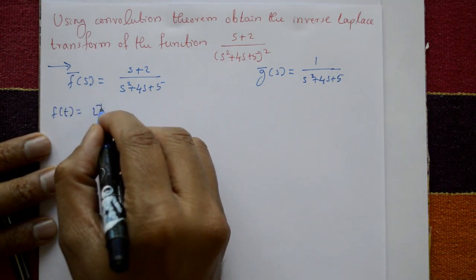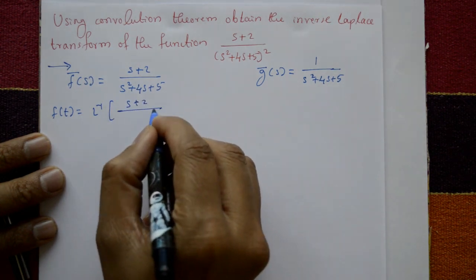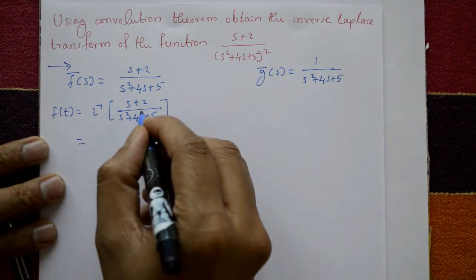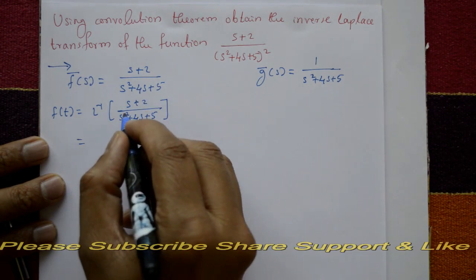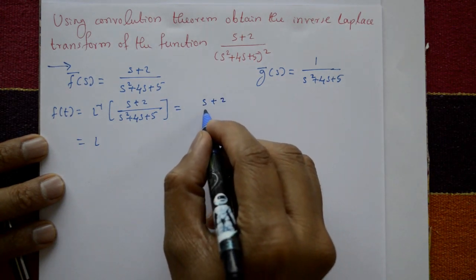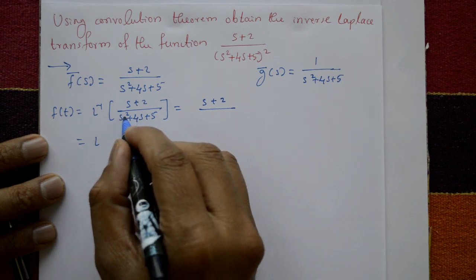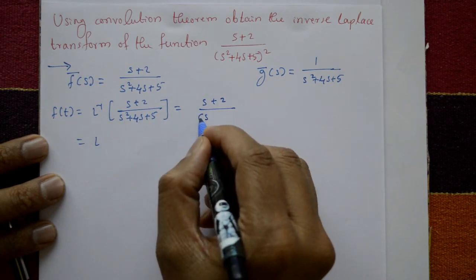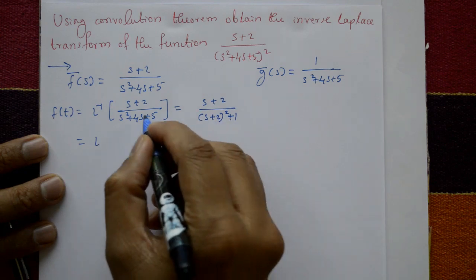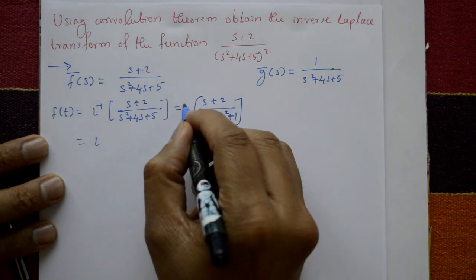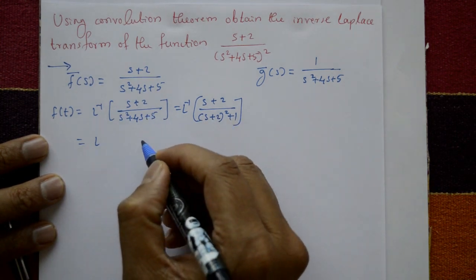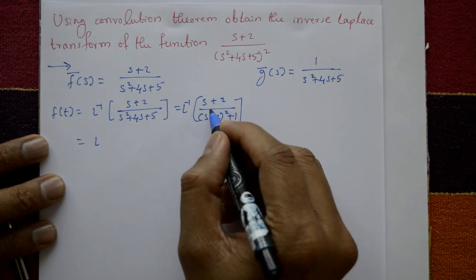Now find f(t): take the inverse of (s + 2) / (s² + 4s + 5) using the shifting property. Arrange the denominator: s² + 4s + 5 = (s + 2)² + 1, completing the square.